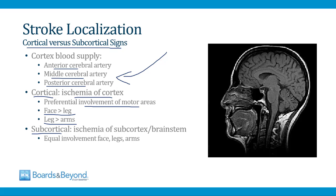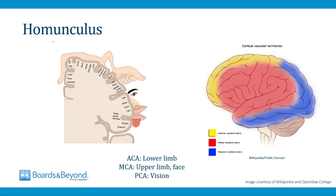A subcortical sign is equal involvement of the face, legs, and arms, indicating that ischemia is not in the cortex but somewhere lower down in the subcortex or brain stem. In other parts like the brain stem and subcortex, the motor fibers all run together. The reason cortical strokes have preferential motor involvement of different body areas is because of what's known as the homunculus.